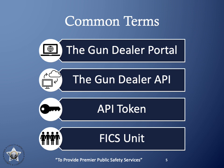By using this API, gun dealers can enhance their existing application to electronically submit requests for firearm and background checks without the need to manually key in their transactions in the gun dealer portal. An API token is required to both authenticate and authorize transactions submitted to the gun dealer API. The FIX unit is a Firearm Instant Check System unit and they conduct background checks and firearm checks for those attempting to purchase or transfer a firearm through all federally licensed firearm dealers in Oregon.